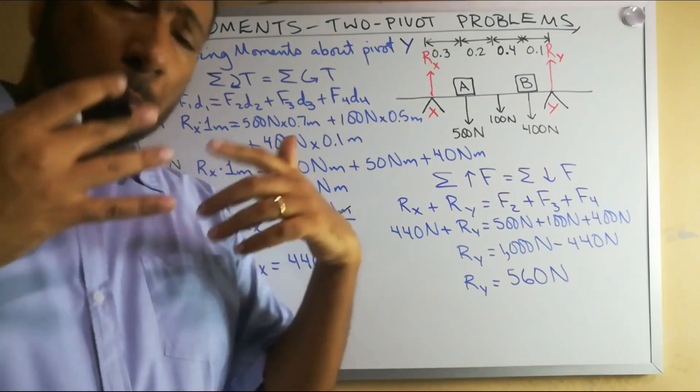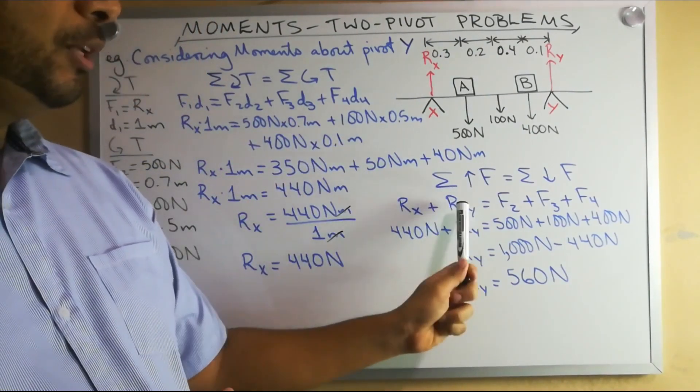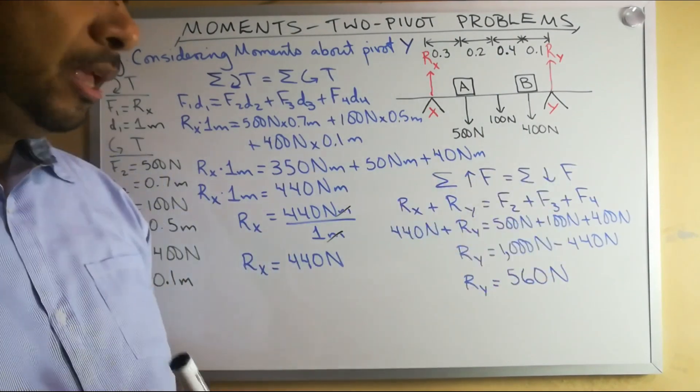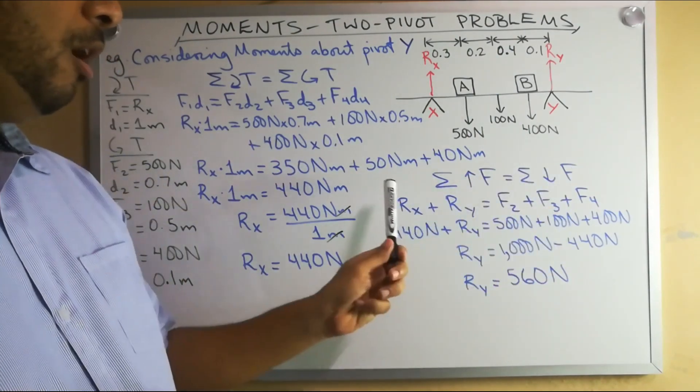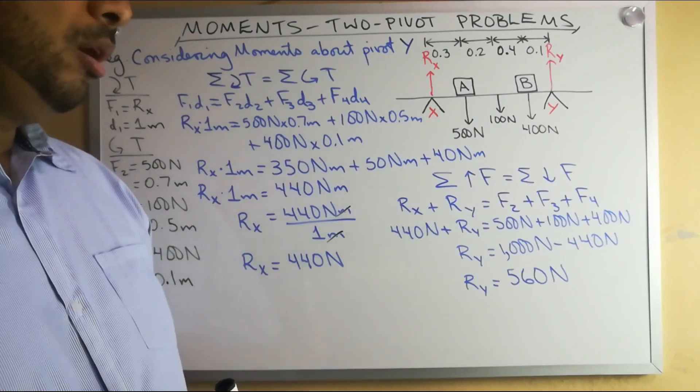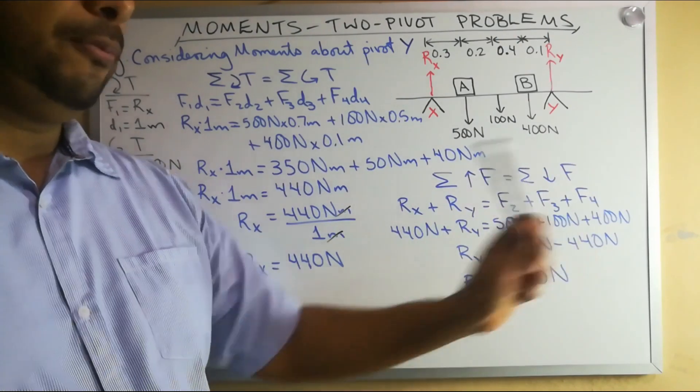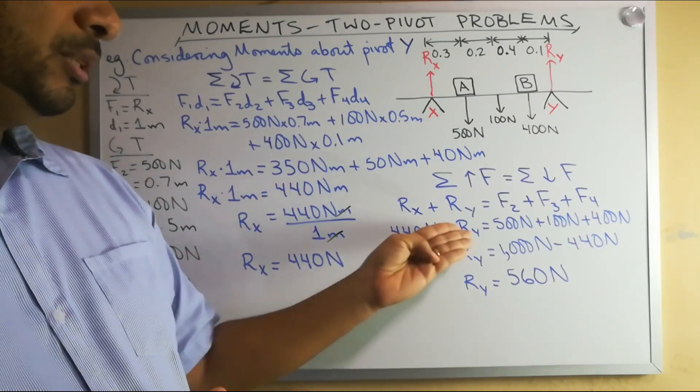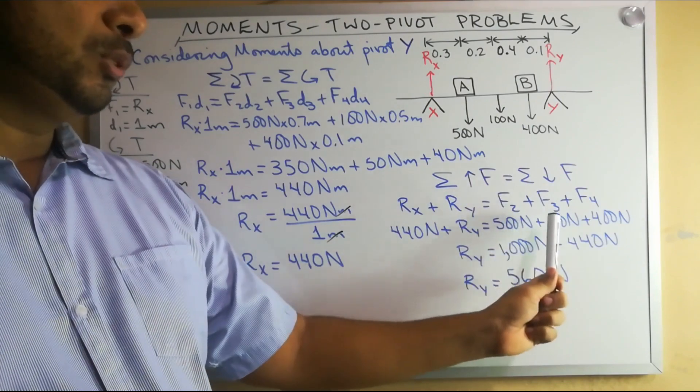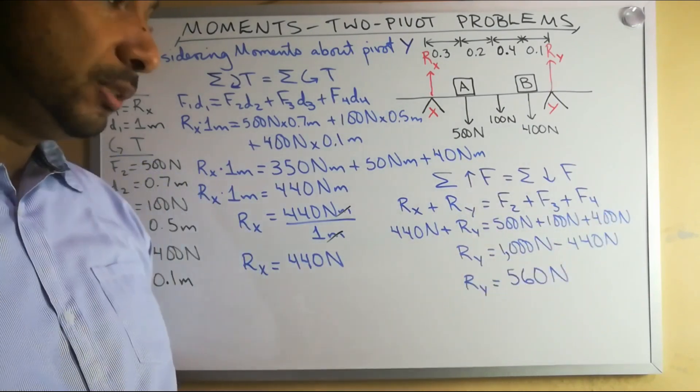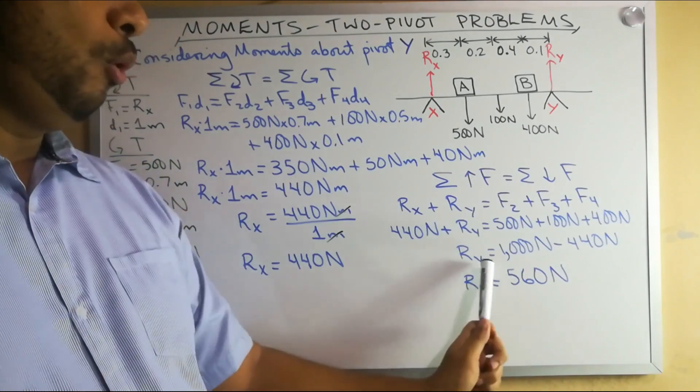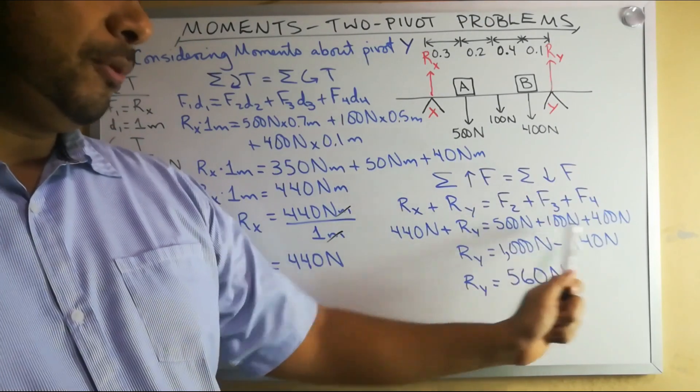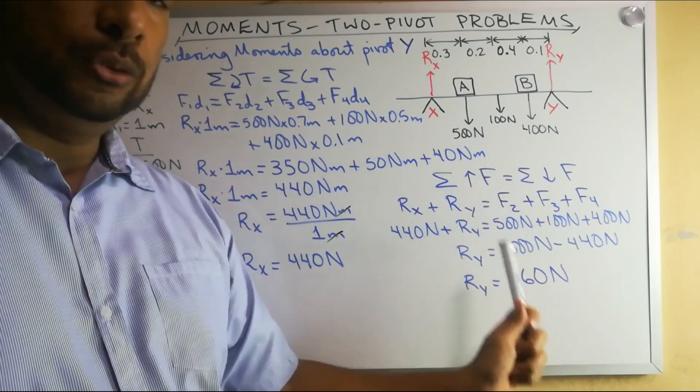Here we have three downward forces and two upward forces. Another principle of moments that we could write is that the sum of the upward forces equals the sum of the downward forces. What are our upward forces? Rx and Ry. What are our downward forces? F2, F3 and F4. Substituting, we'll have that 440 Newtons plus R sub Y equals 500 Newtons plus 100 Newtons plus 400 Newtons. 500, 100, and 400 adds up to 1000. Transposing that 440 Newtons, we subtract it from 1000 and we get 560 Newtons.